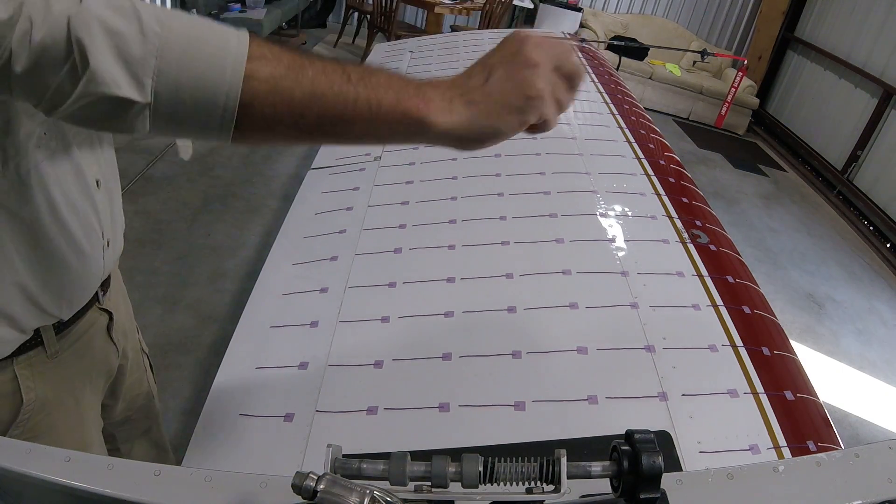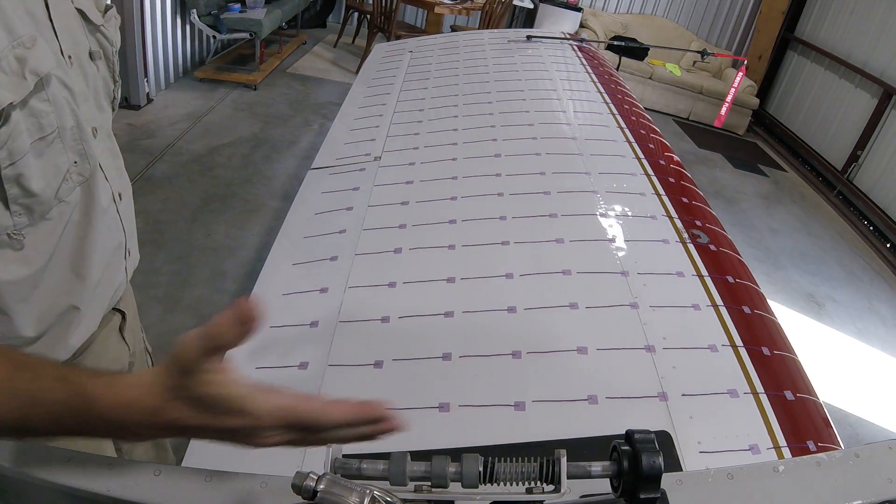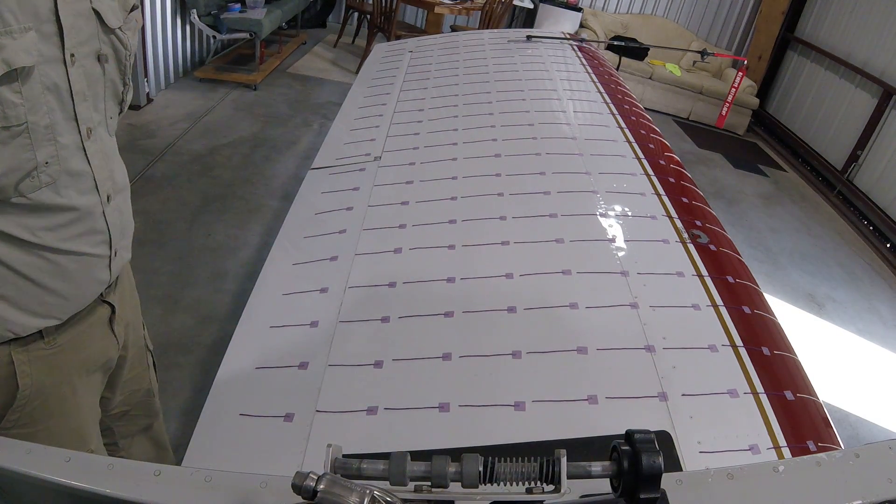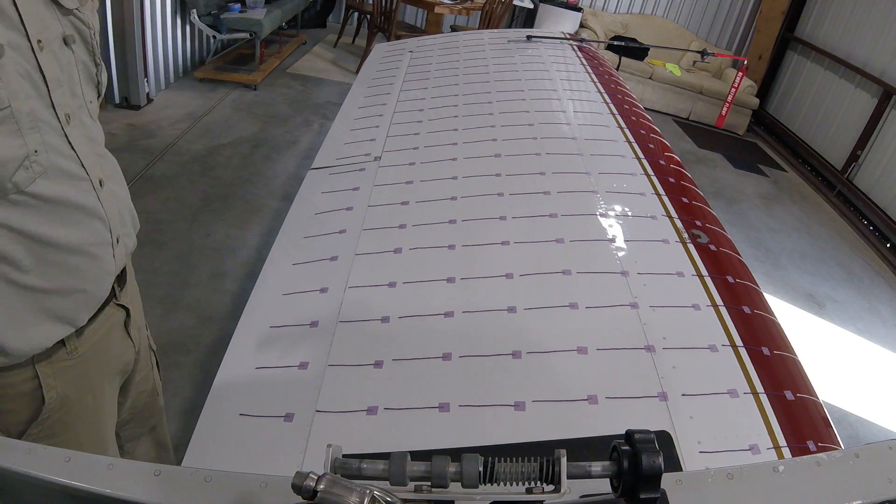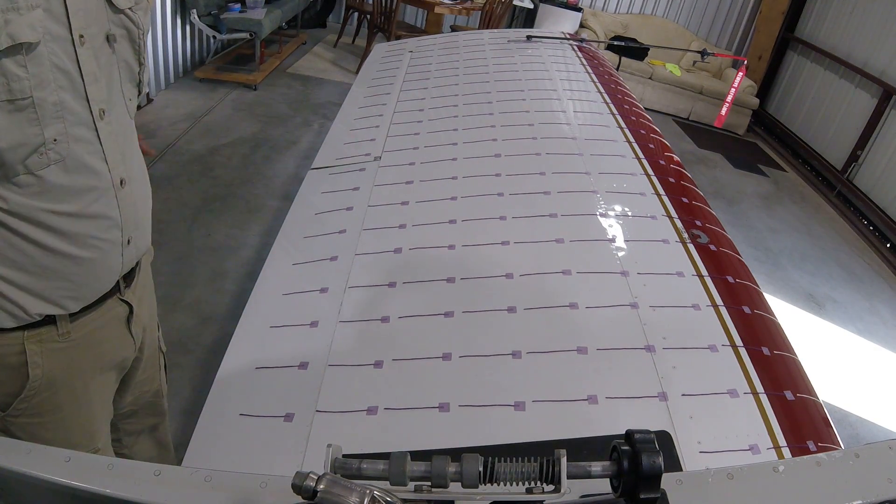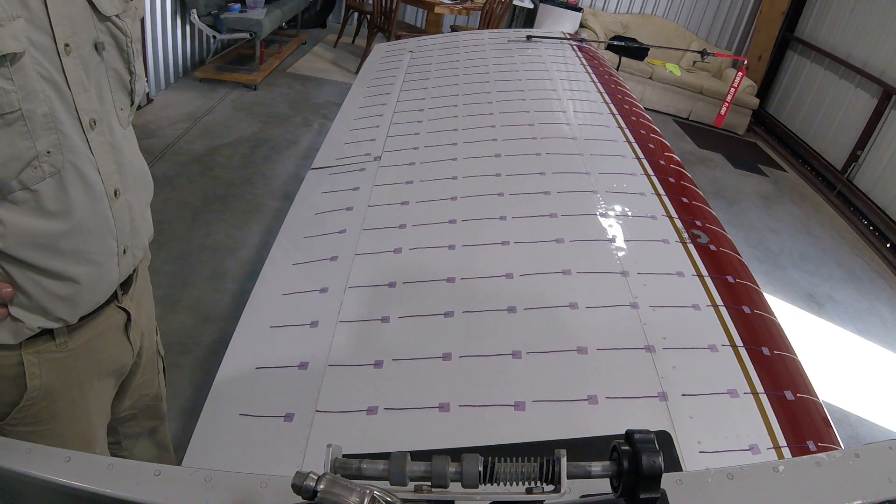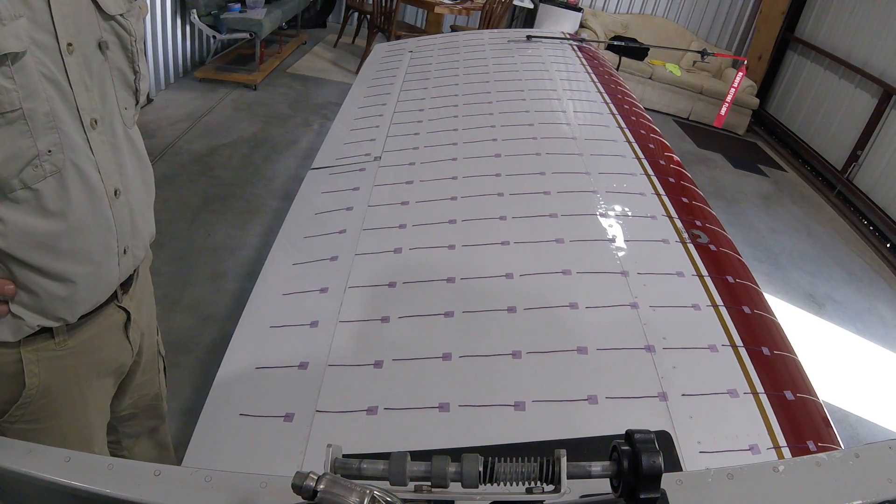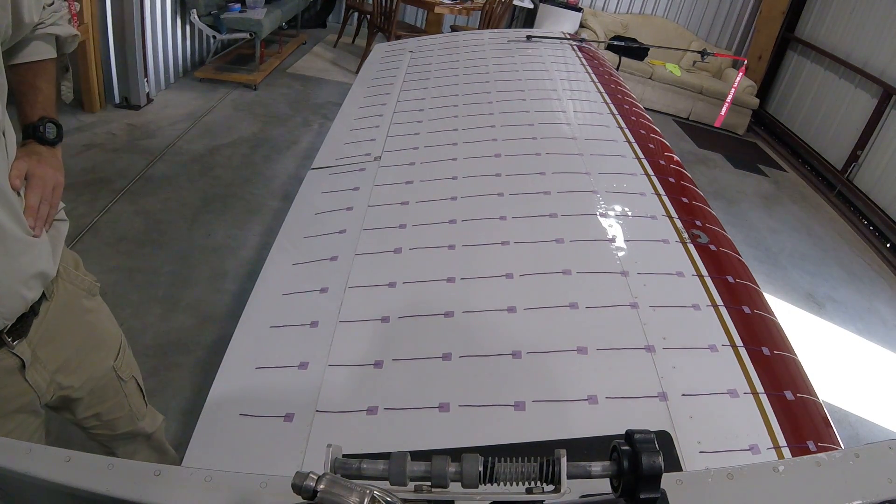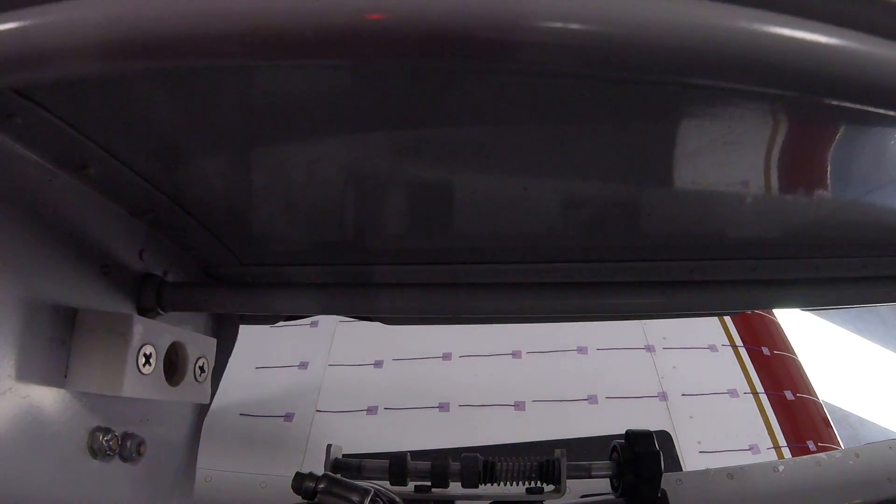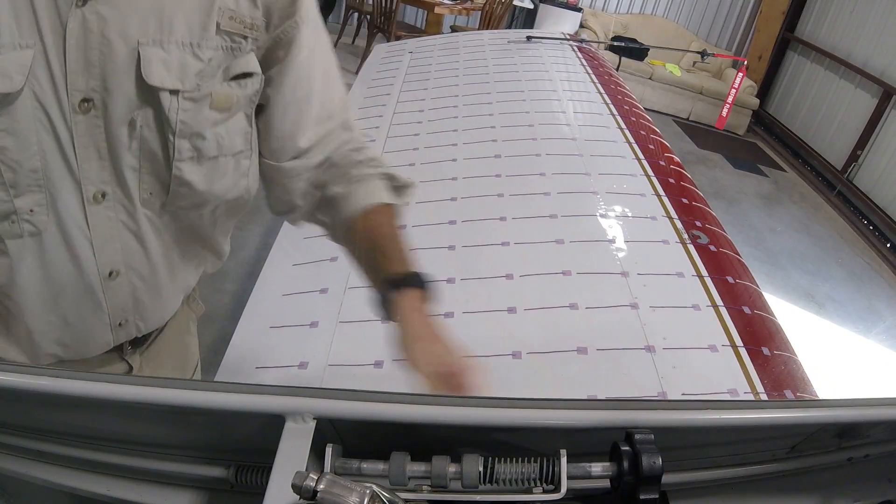So first thing I'm going to do is close the canopy because we're going to lose a little bit of the bottom field of view because of the canopy rail. No way around it. I've got the camera up about as high as we can get it. And I don't know that we're going to get any better view over the canopy rail. So let's just close this. There we go.